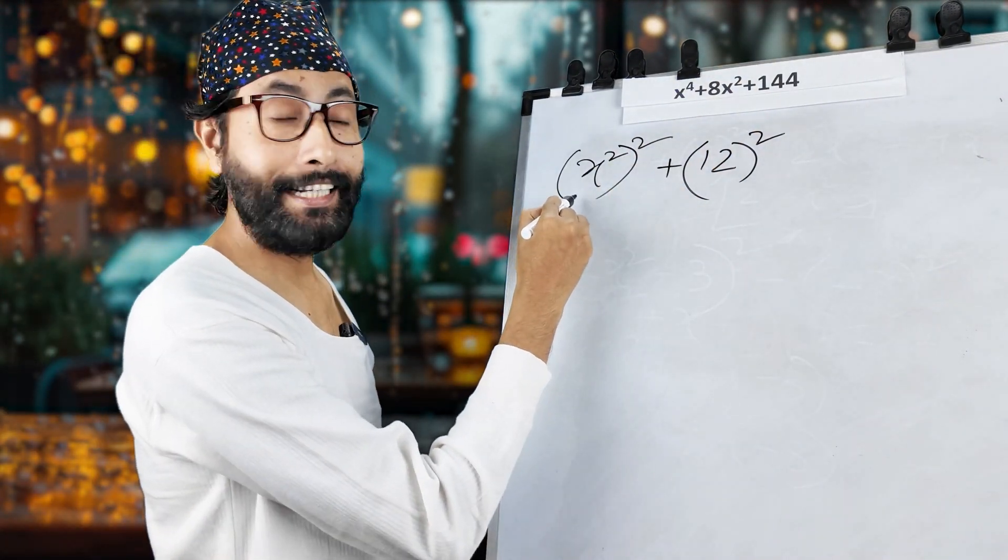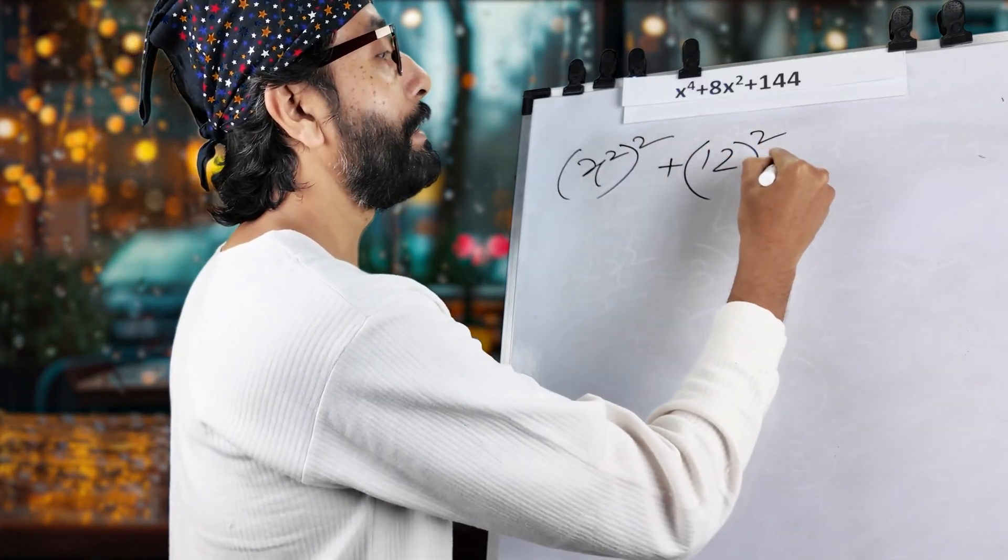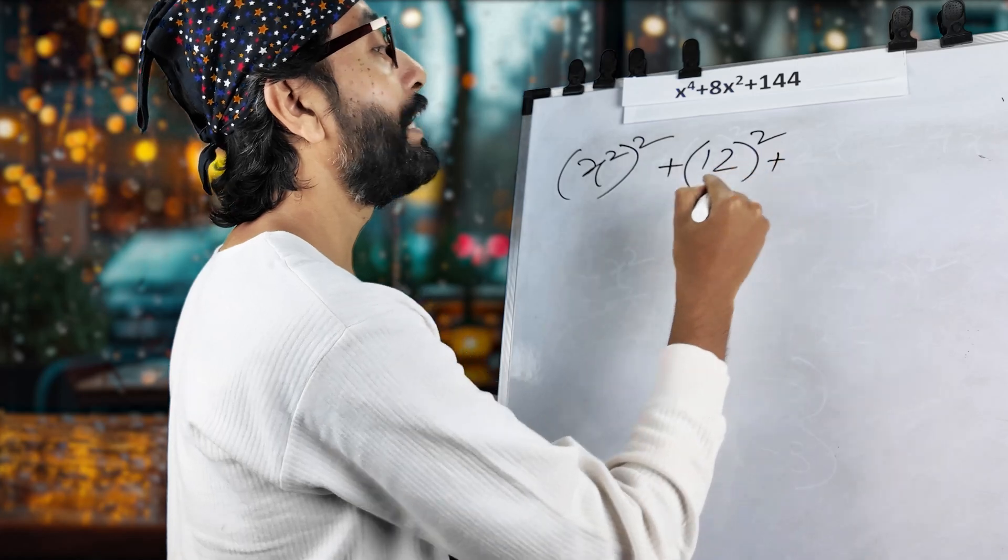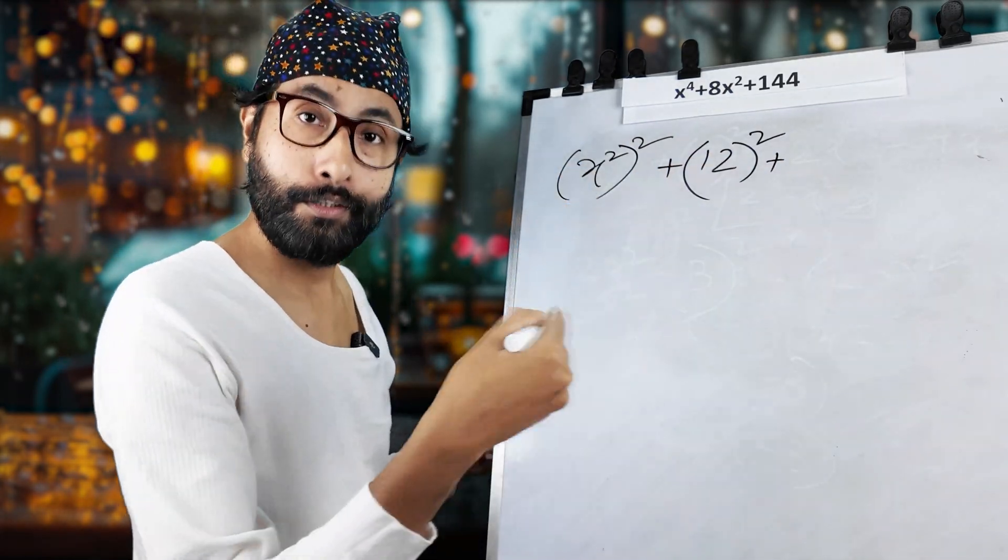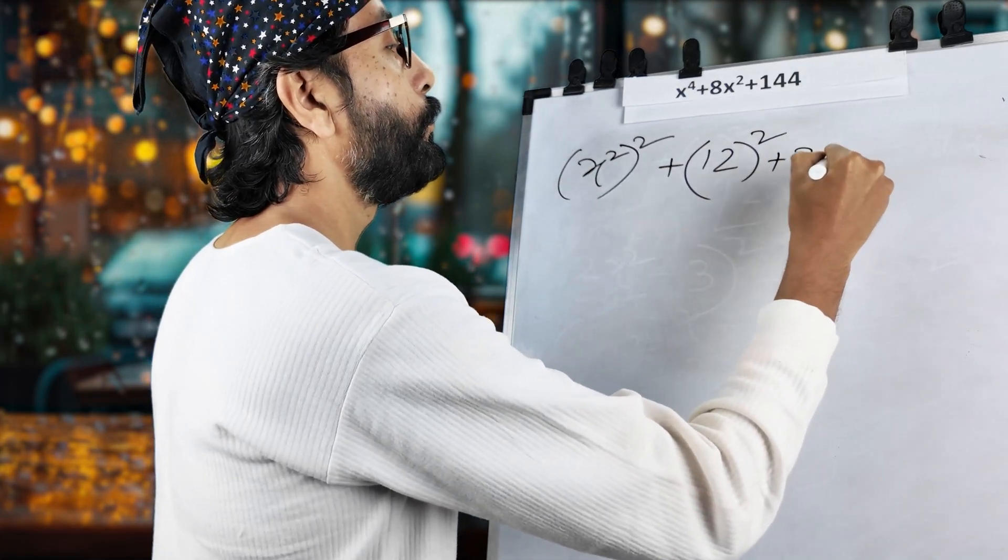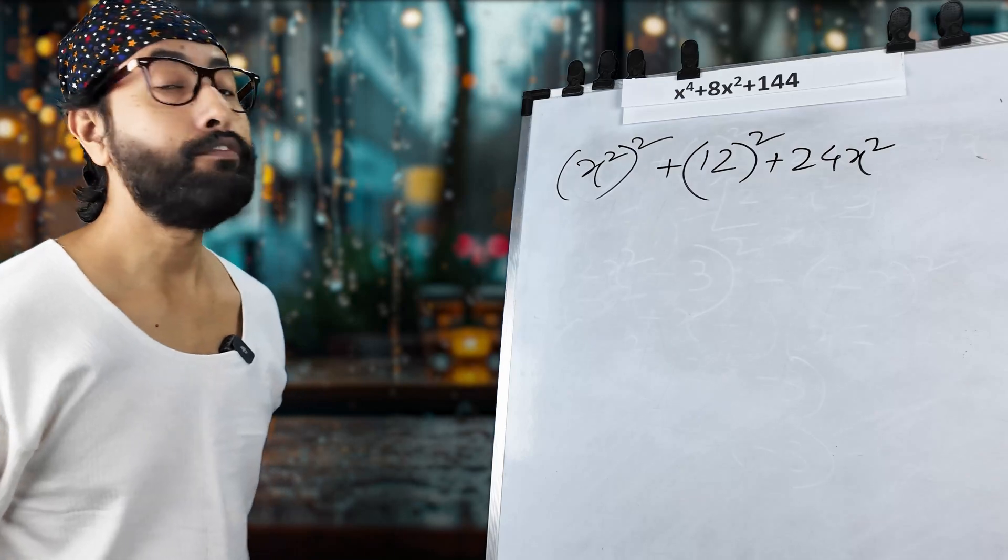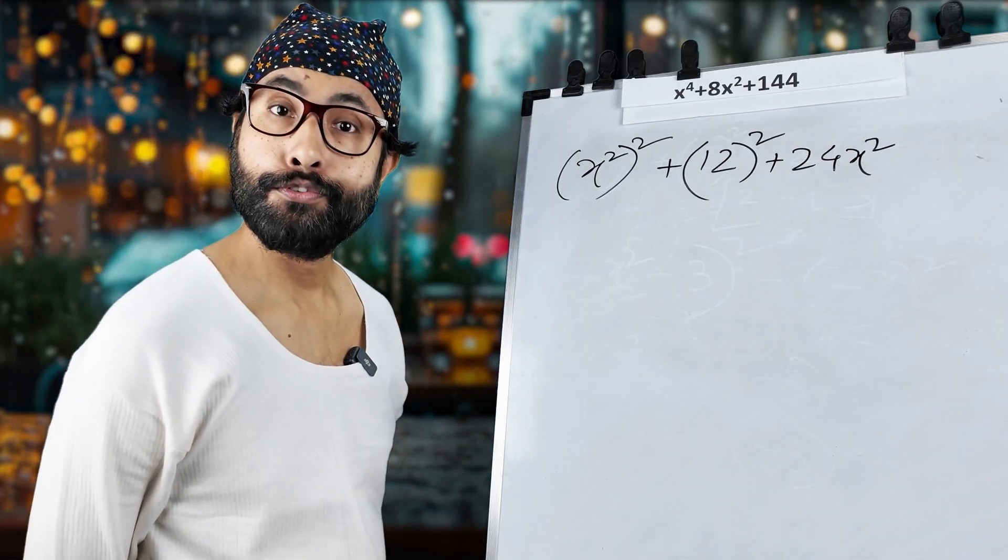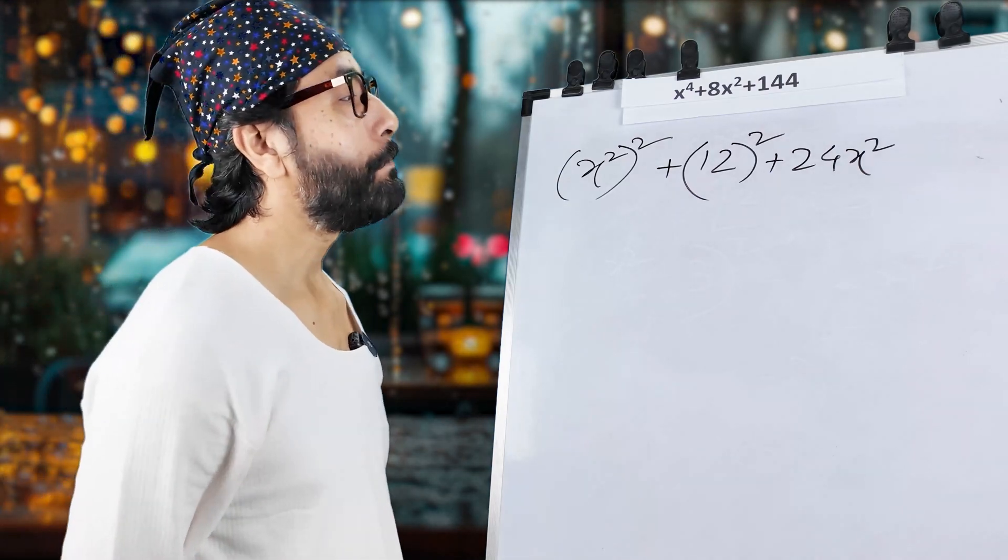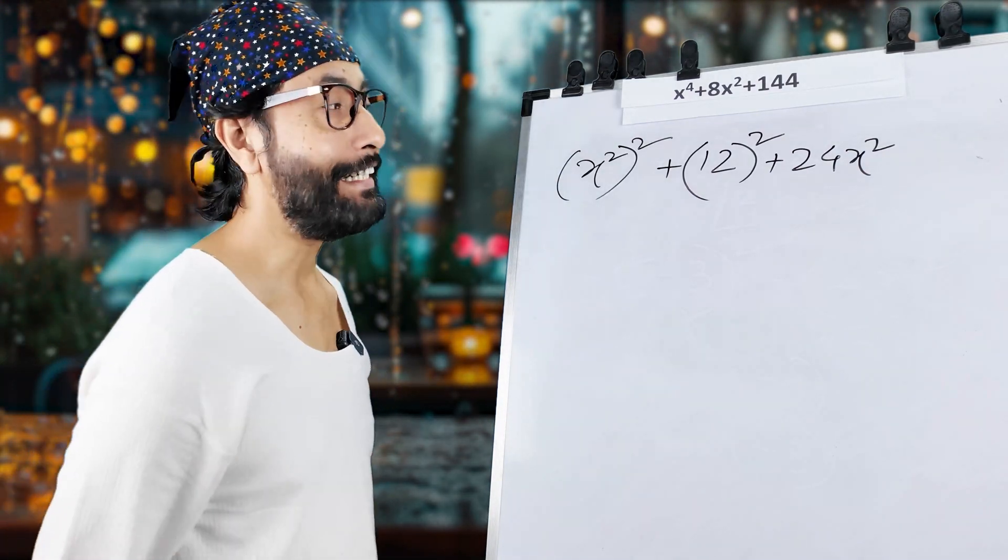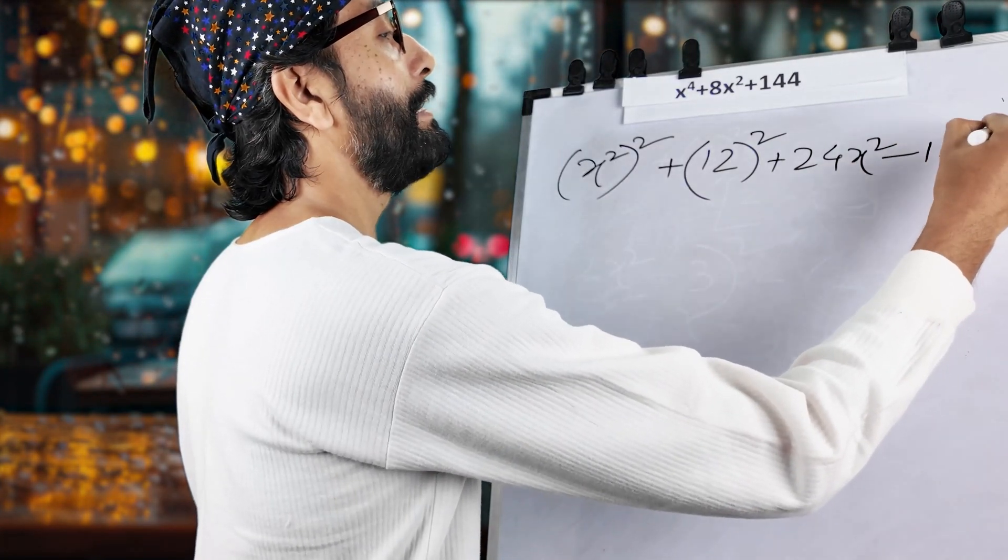So, Now, this is A, initial A. This is B, initial B. And then we have to find 2AB. That is 2 into A into B. That means, 2 12s are 24. 24 x square. But we have only 8. What to do? You know this better. Now, we have to subtract that extra 16. Yes. 16 x square.